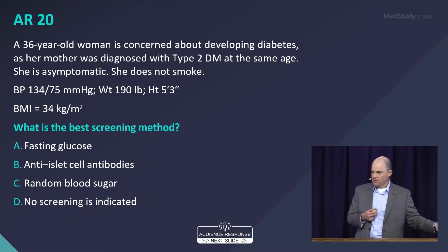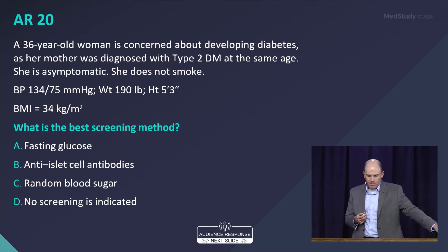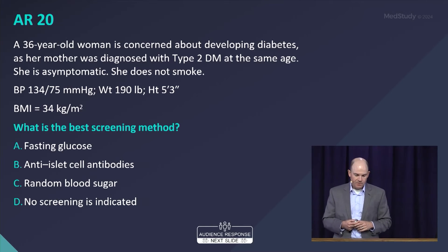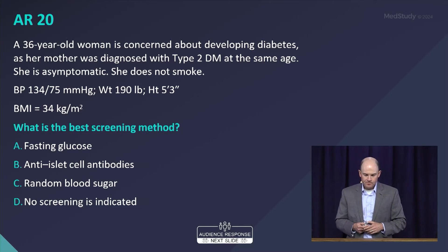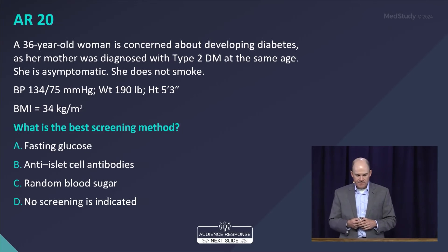First audience response question: A 36-year-old woman is concerned about developing diabetes as her mother was diagnosed with type 2 diabetes at the same age. She is asymptomatic, does not smoke, has a blood pressure of 134 over 75, weighs 190 pounds with a BMI of 34. What is the best screening method? A: fasting glucose. B: anti-islet cell antibodies. C: random blood sugar. Or D: no screening is indicated.